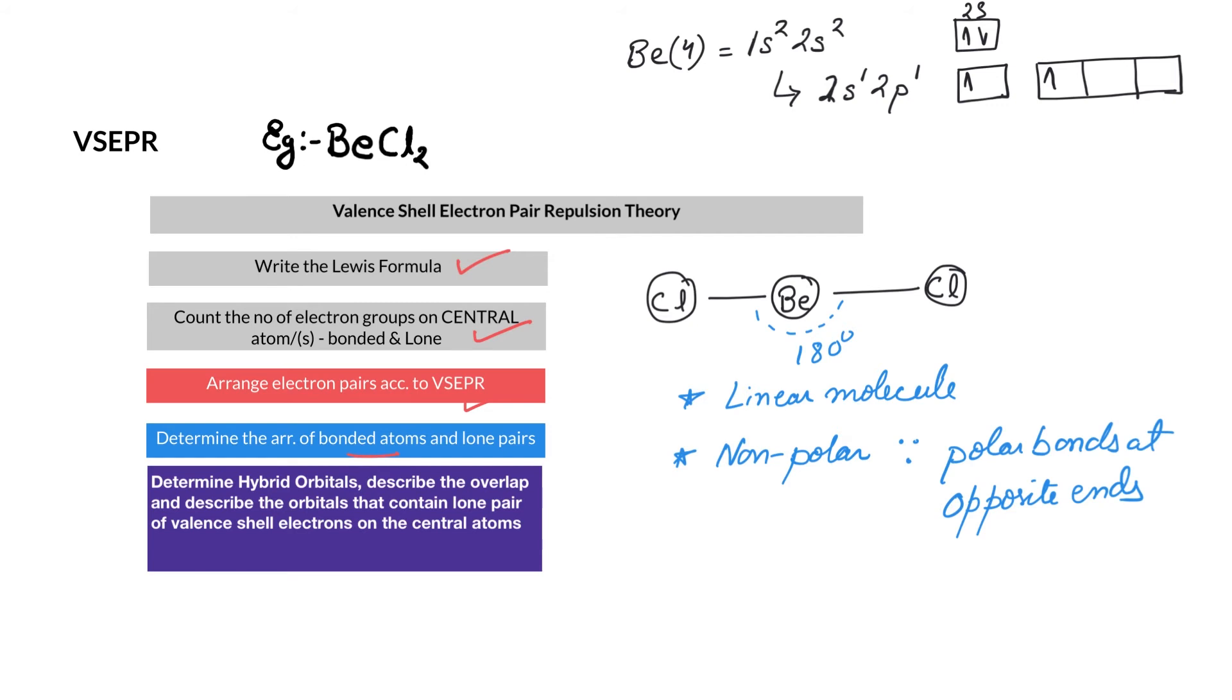After that, we include one extra step: determine the hybrid orbitals and the overlap of these orbitals and the orbital that contains the lone pair of valence shell electrons of the central atom. Let's do that for BeCl₂. Remember, Be is an exception to the octet rule. If you want more explanation, check out the exceptions to octet rule video—link is in the description.